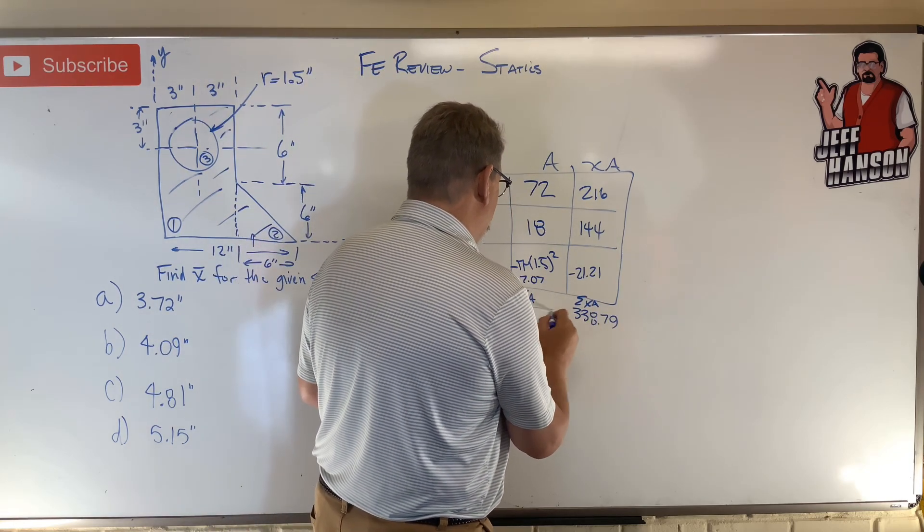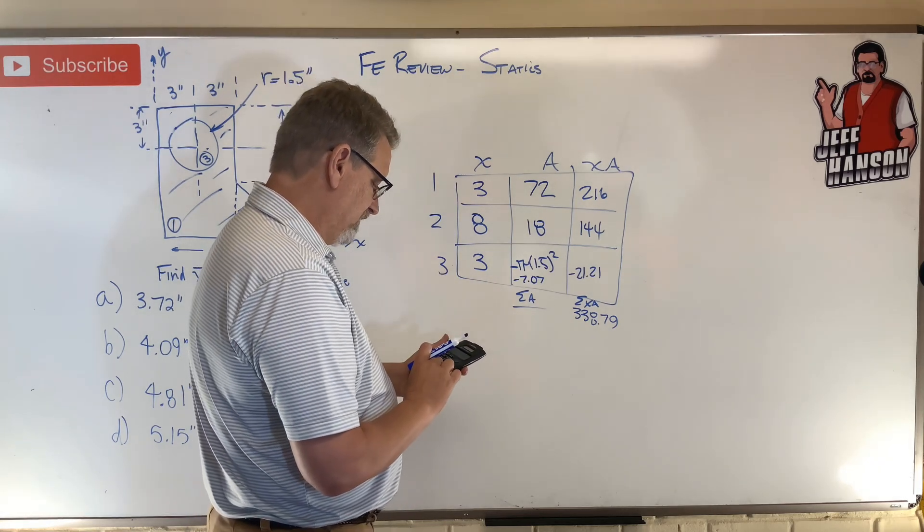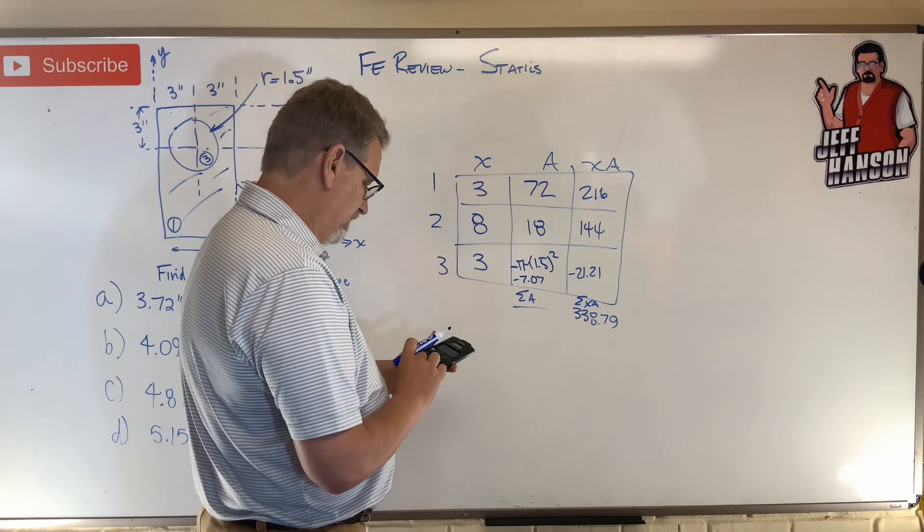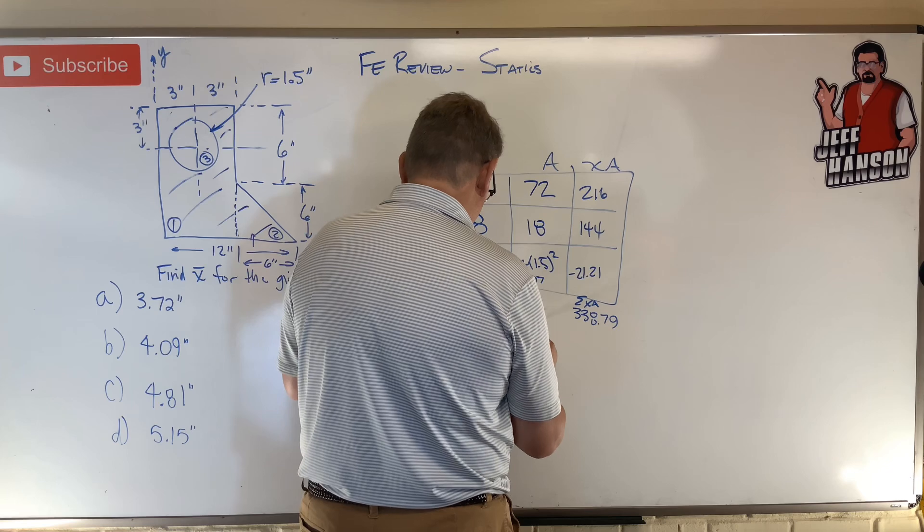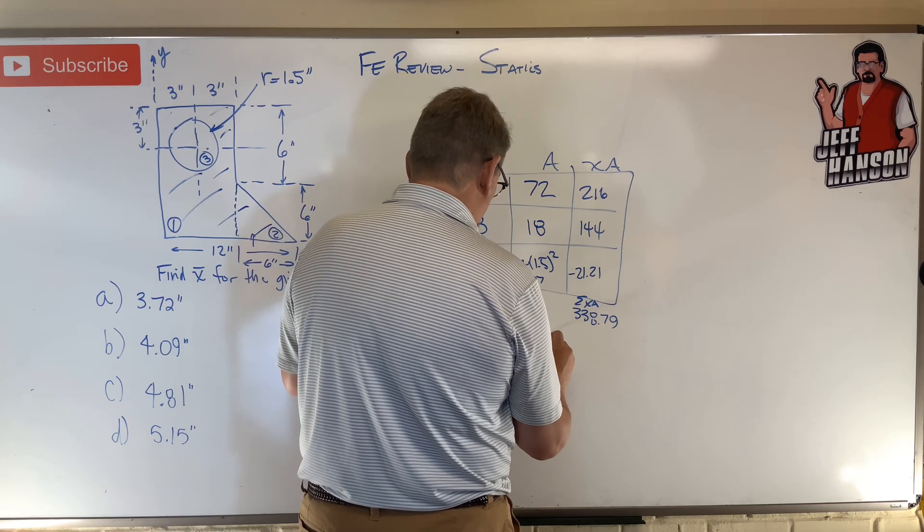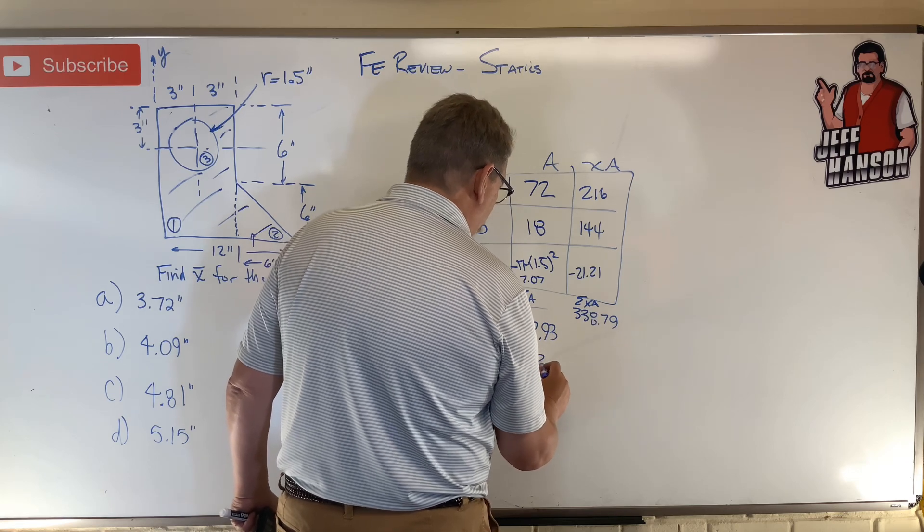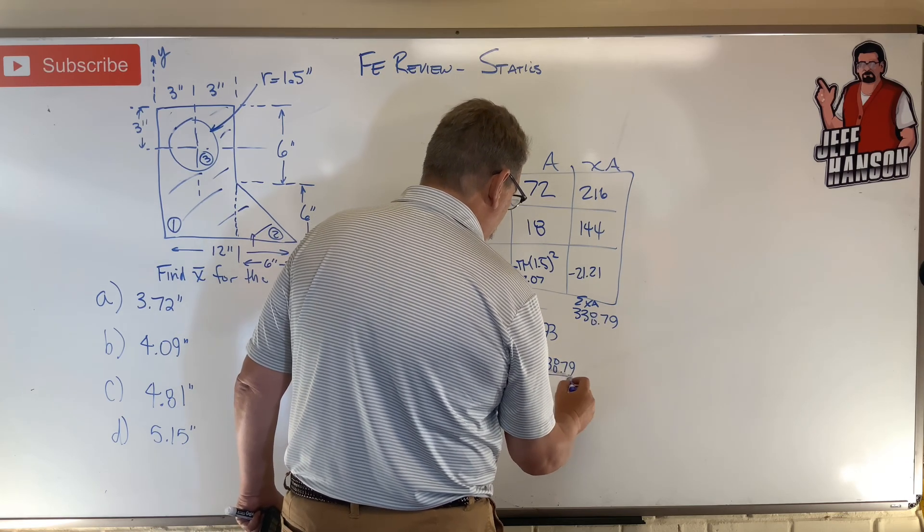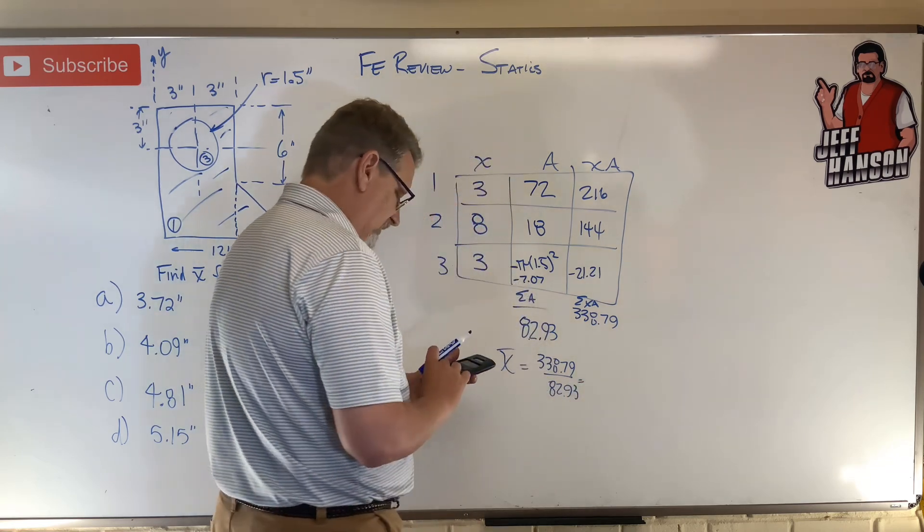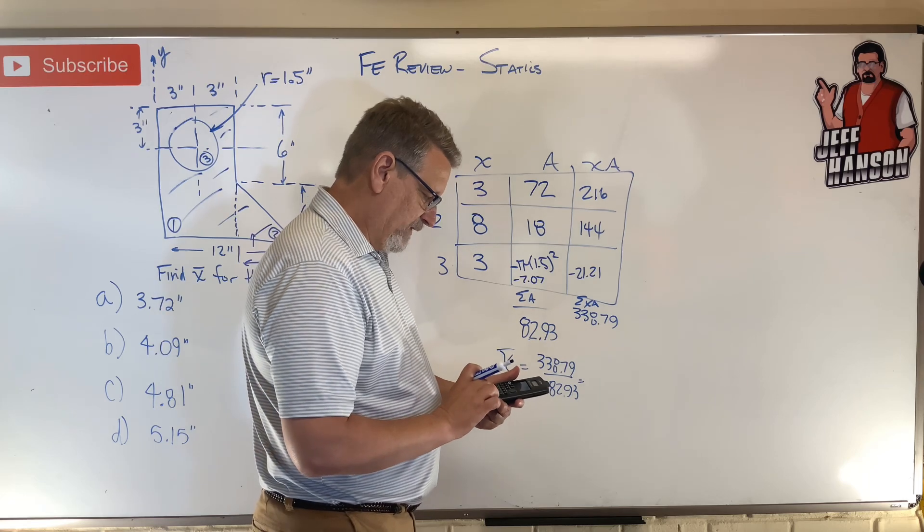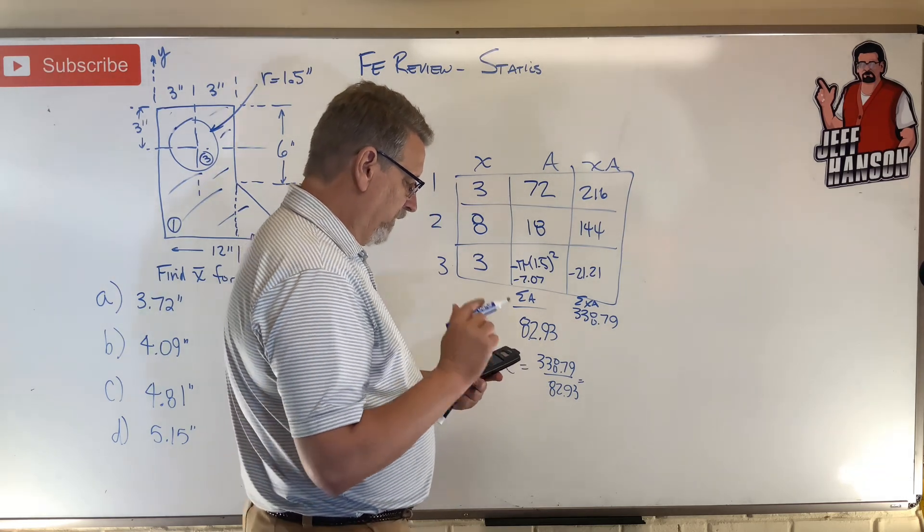Now I need the sum of the a's, which is going to be 72 plus 18 minus 7.07 is 82.93. So x bar is equal to 338.79 divided by 82.93, which is 338.79 divided by answer equals 4.09.